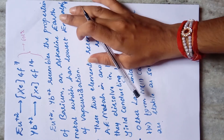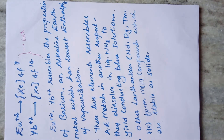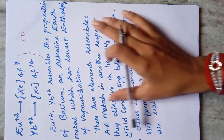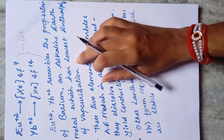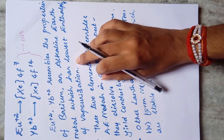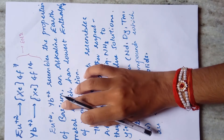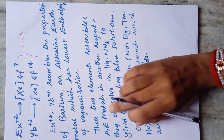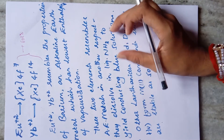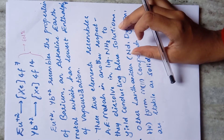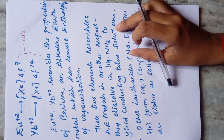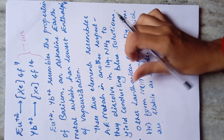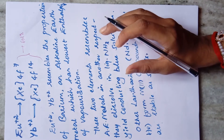Europium(II) and ytterbium(II) resemble the properties of barium, an alkaline earth metal, which has the lowest enthalpy of vaporization. These elements also dissolve in liquid ammonia to yield a conducting blue solution, similar to Group 2A elements — demonstrating their correlation with alkaline earth metals.